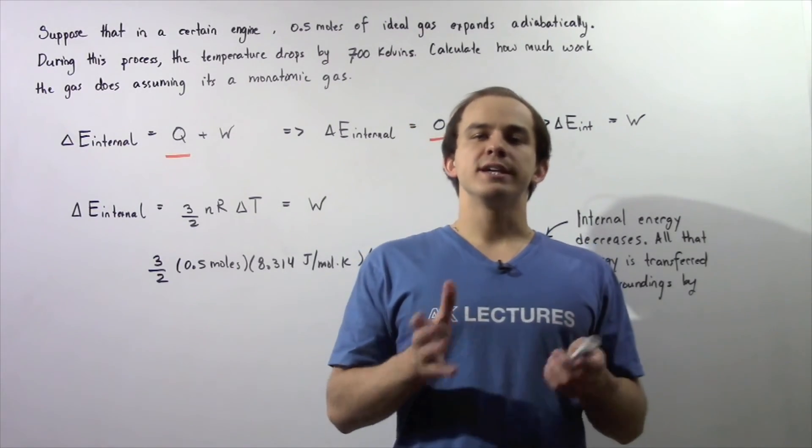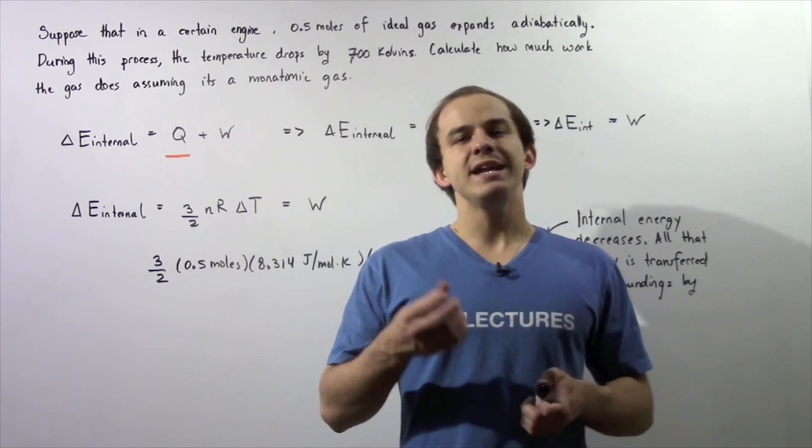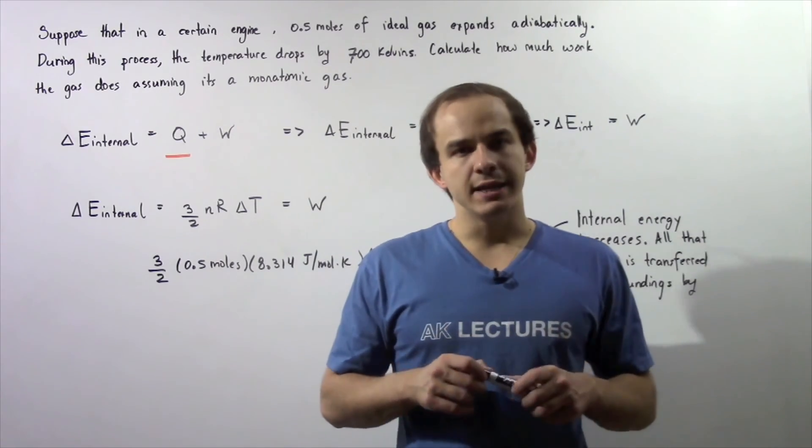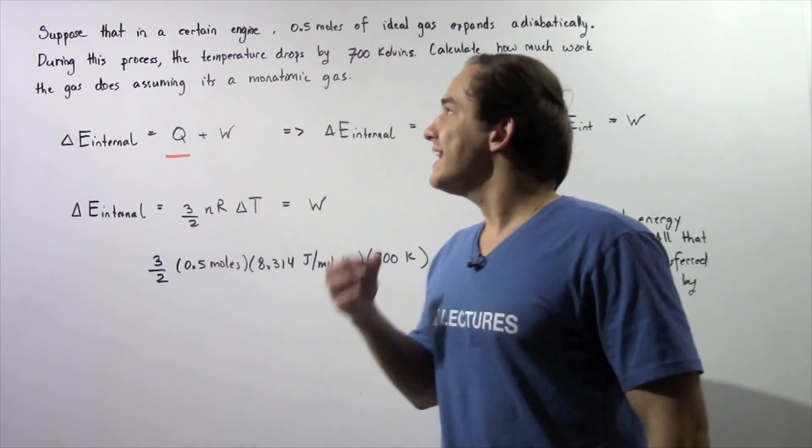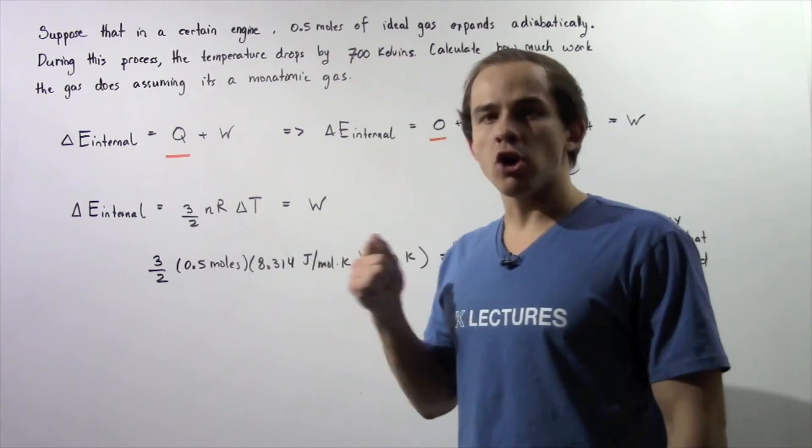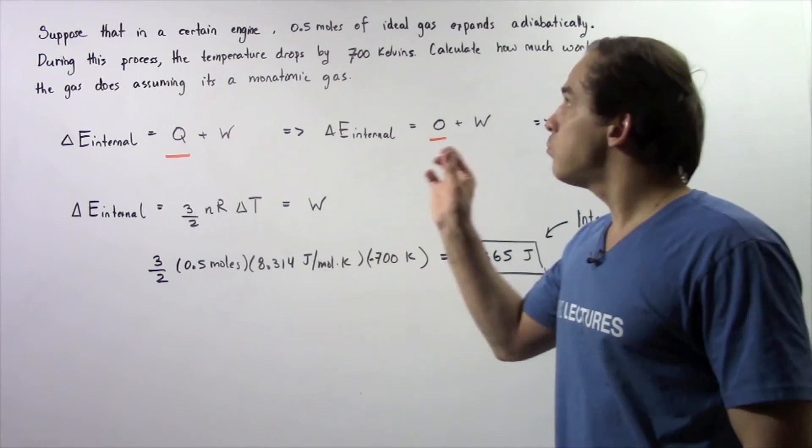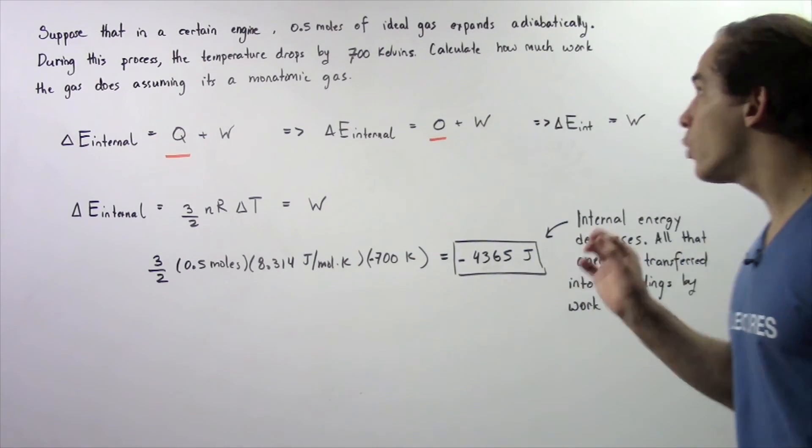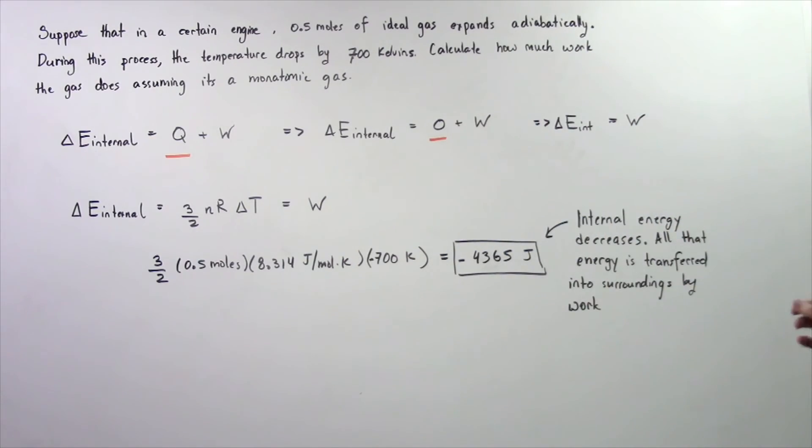So, let's look at the following example that will deal with an adiabatic expansion of an ideal gas. Let's begin and suppose that inside a certain car engine, there is 0.5 moles of ideal gas that expands quickly and adiabatically.